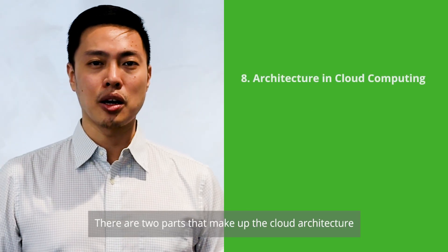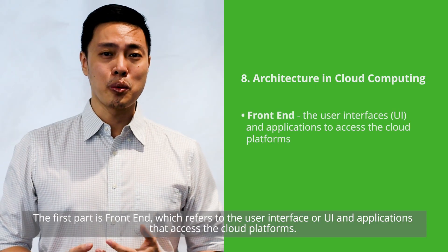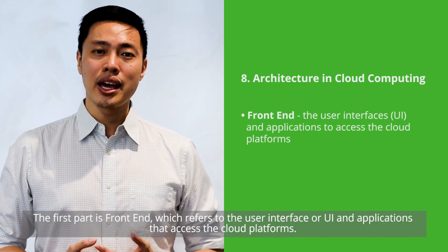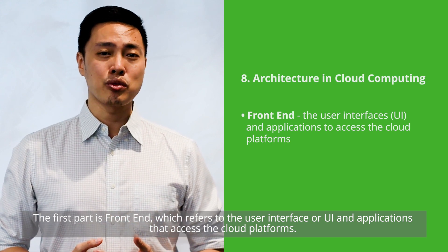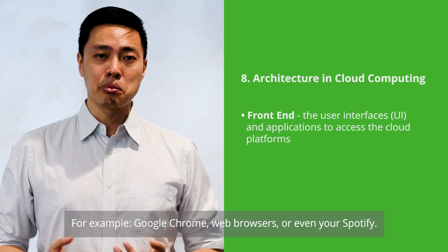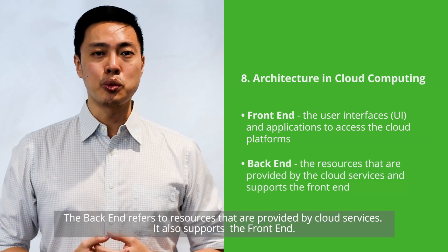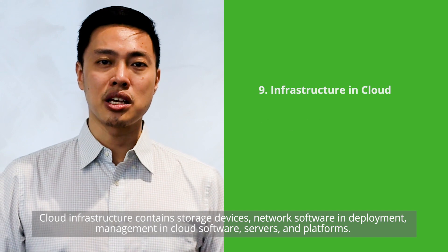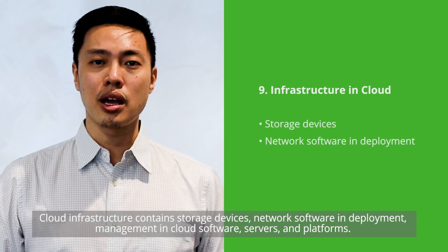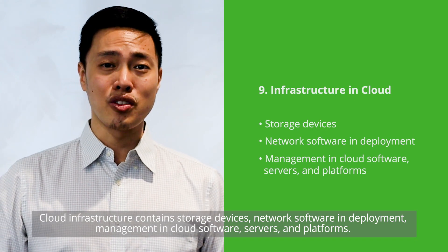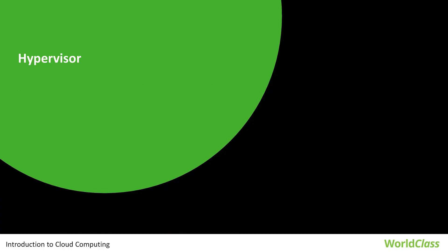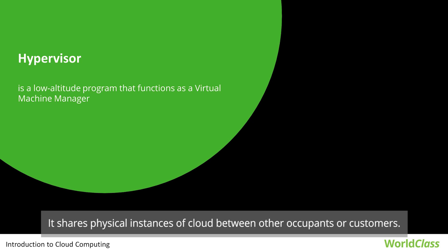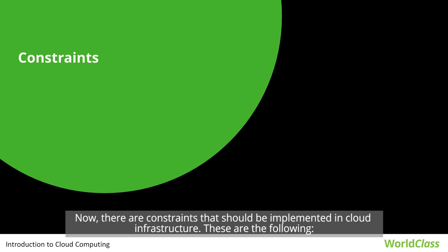There are two parts that make up cloud architecture. The first part is front-end, which refers to the user interface and applications that access cloud platforms — for example, Google Chrome, web browsers, or even Spotify. The back-end refers to resources provided by cloud services and supports the front-end. Cloud infrastructure contains storage devices, network, software and deployment, management in cloud software, servers, and platforms. The hypervisor is a low-level program that functions as a virtual machine manager and shares physical instances of the cloud between occupants or customers.